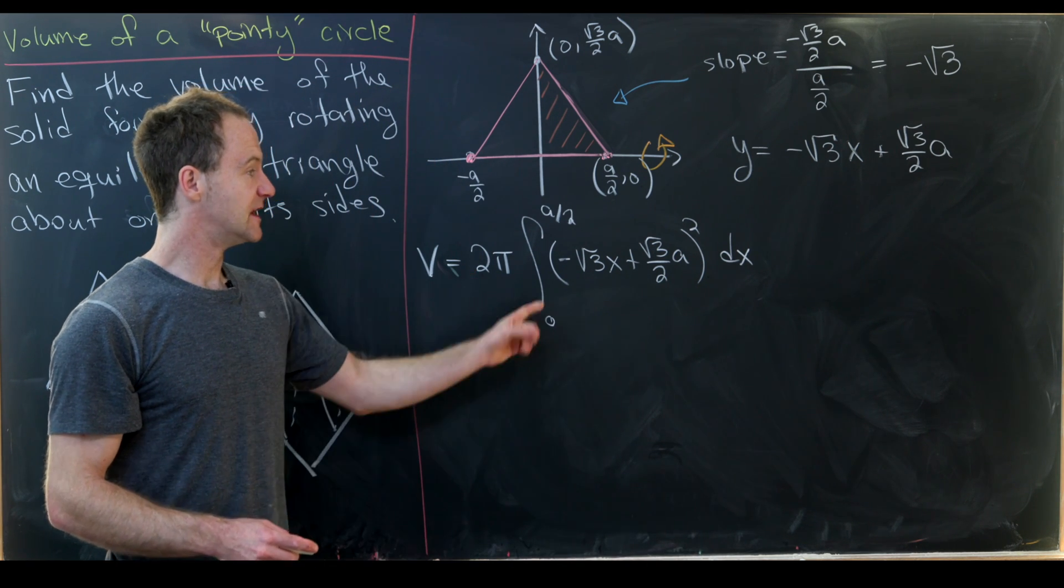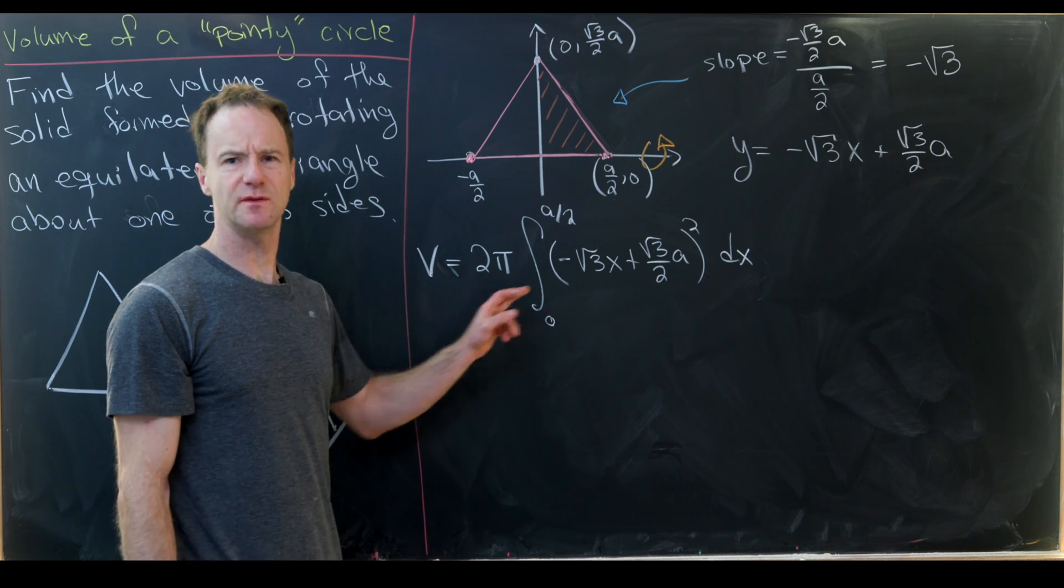Okay so anyway now we're left with a polynomial which we'd like to integrate. So that should not be too bad. So let's do it but instead of multiplying this out let's maybe practice our u substitution just to make the calculation a little bit easier. So let's set all of this equal to u. In other words we have u is equal to negative square root of three x plus the square root of three over two times a.